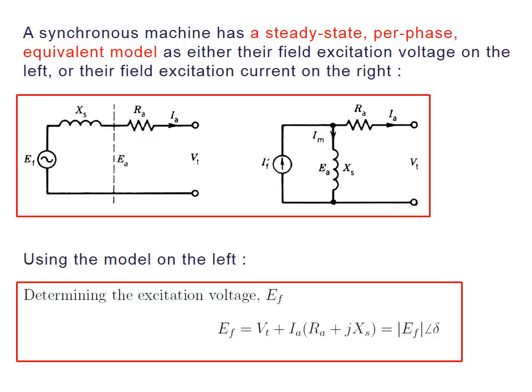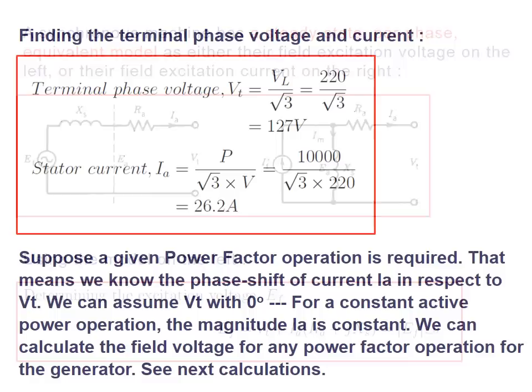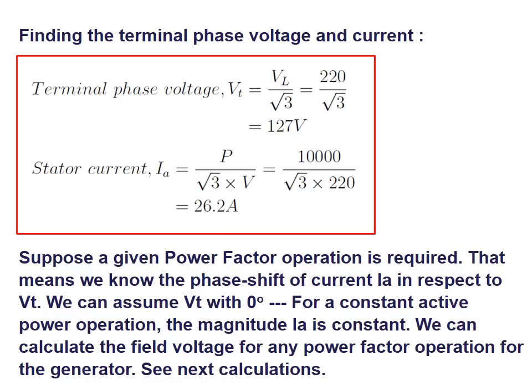This field excitation voltage will have a certain magnitude EF at a certain phase angle delta. For this simple model, if VT is at phase zero, EF is at phase delta, and we have equations relating active and reactive power. The terminal phase voltage is 220 divided by the square root of 3. From the machine power, we can calculate the current for those conditions: it is 26.2 amps.